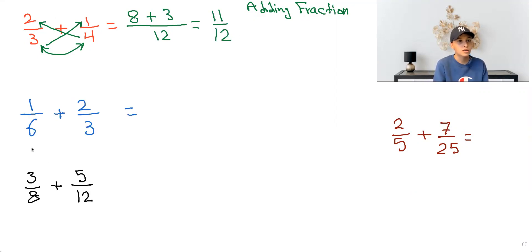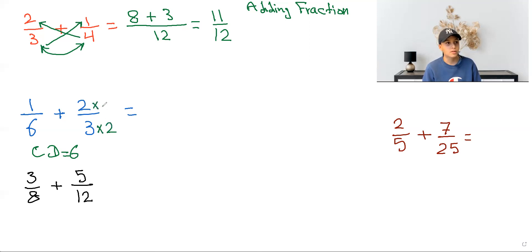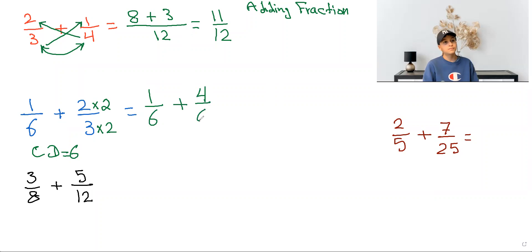So the first thing we do is find the common denominator. We look at the biggest number first, and then we see if the smallest number can go into the biggest number. So if 3 goes into 6, your common denominator will be 6. So now we need to make the denominators the same. You do 3 times 2, and then whatever you do to the bottom, you have to do to the top, so you do 2 times 2. So now we do 1 over 6 plus 4 over 6, which equals 5 over 6.